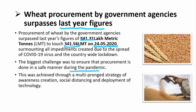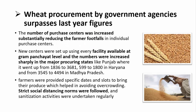To ensure safe and timely procurement while maintaining social distancing, the government took several steps. The number of purchase centers was substantially increased to reduce farmer footfalls and avoid overcrowding: in Punjab from 1,836 to 3,681 centers; in Haryana from 599 to nearly 1,800 centers; and in Madhya Pradesh from 3,545 to 4,494 centers. Farmers were also provided specific dates and time slots to bring their produce, and strict sanitization activities were undertaken regularly.